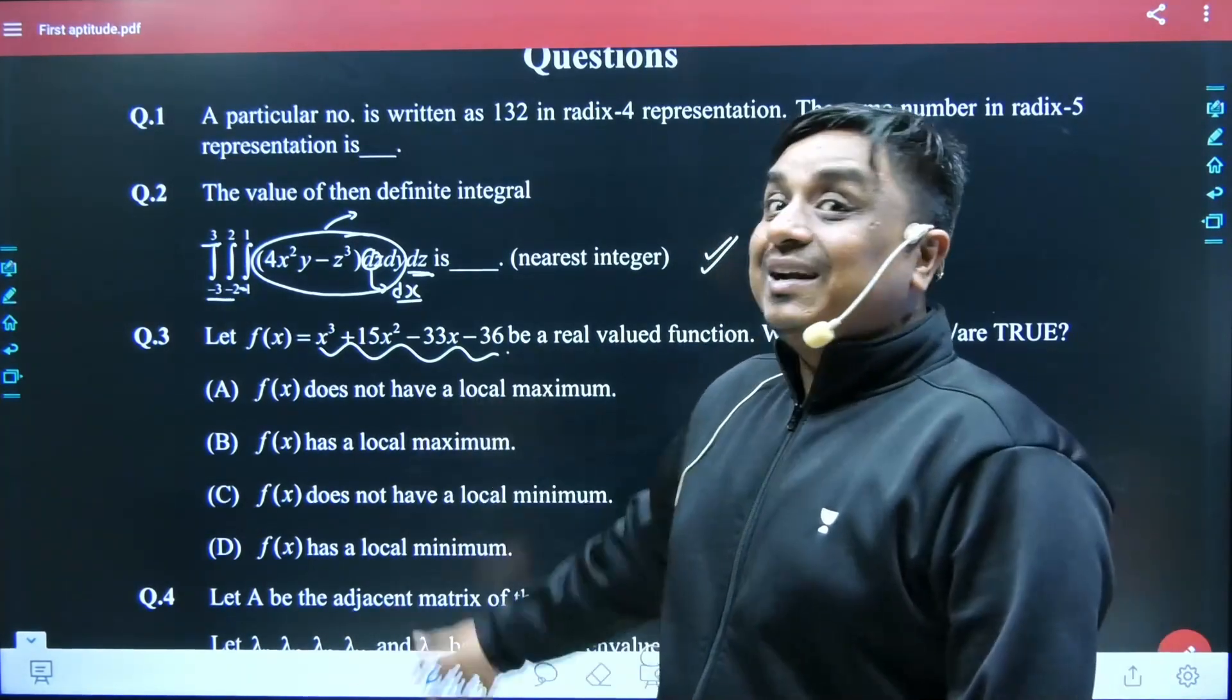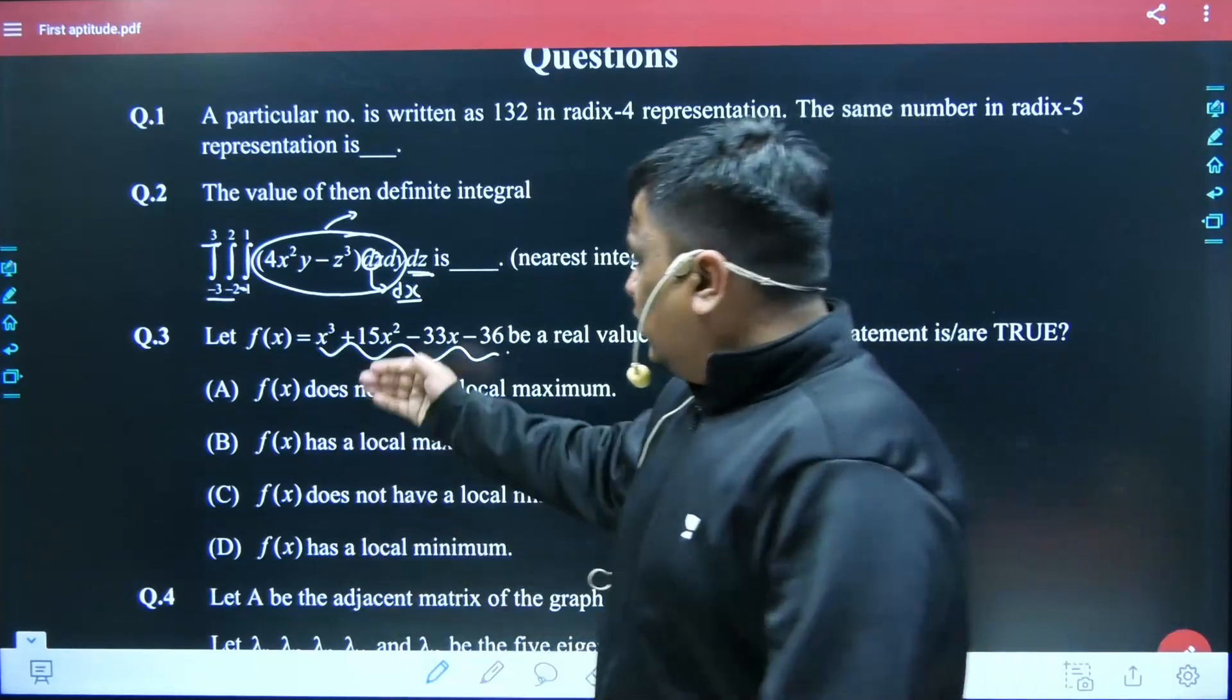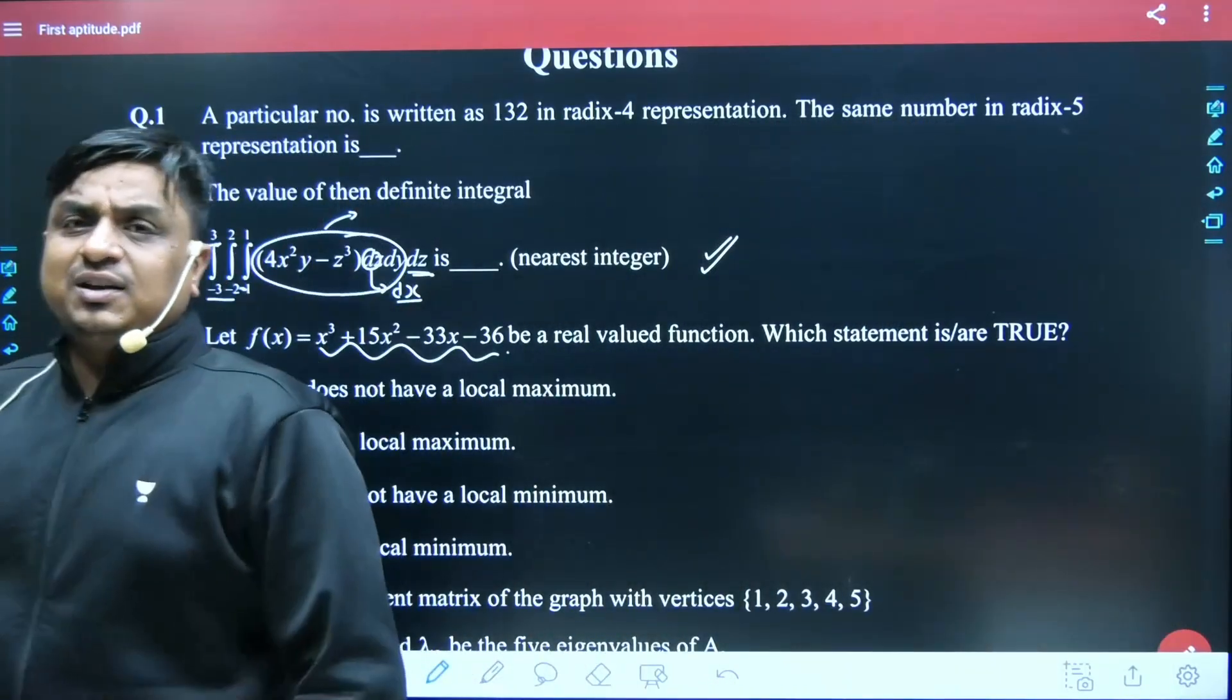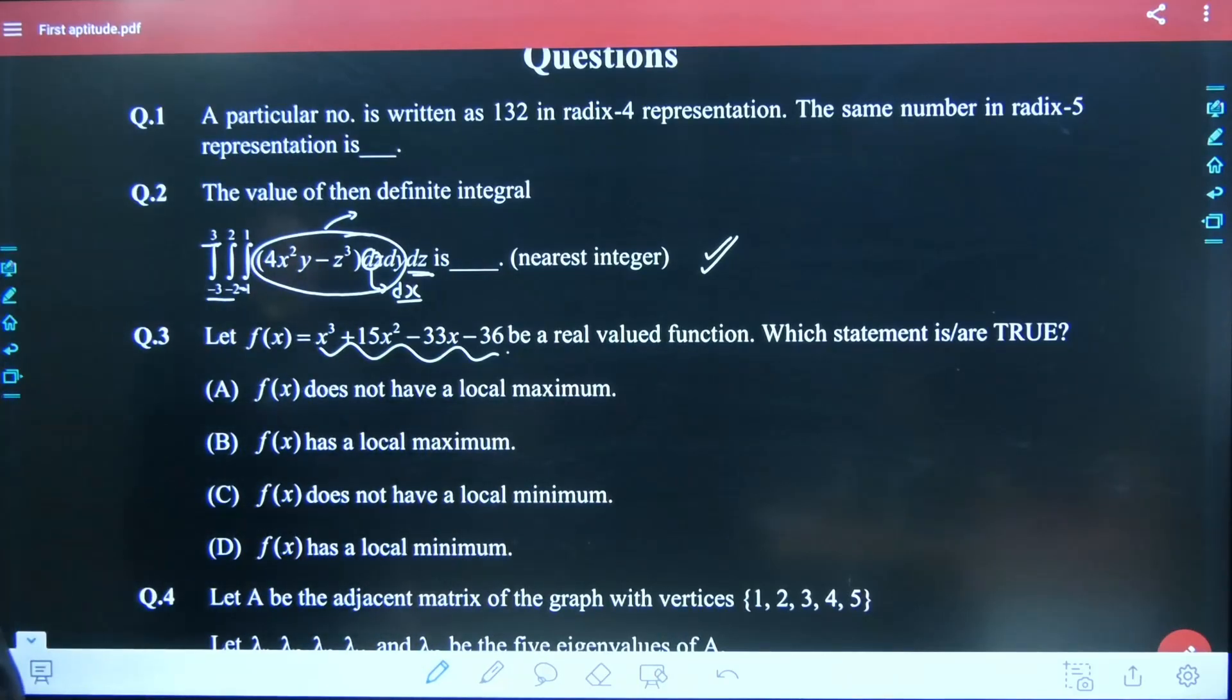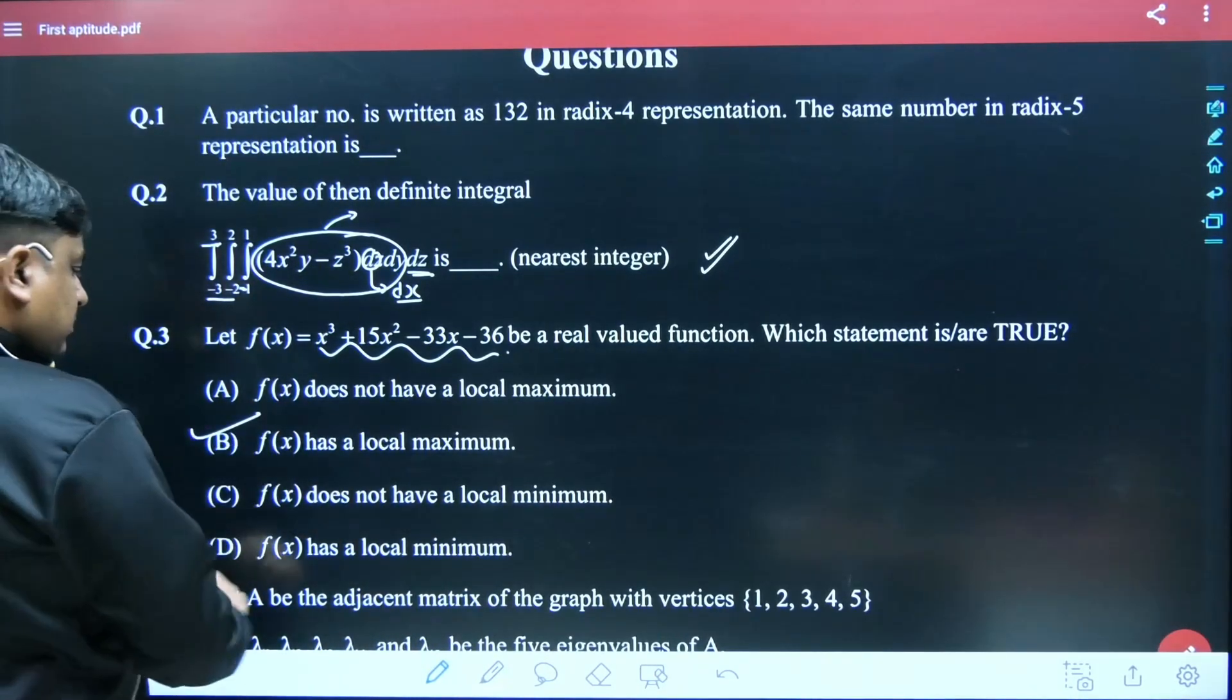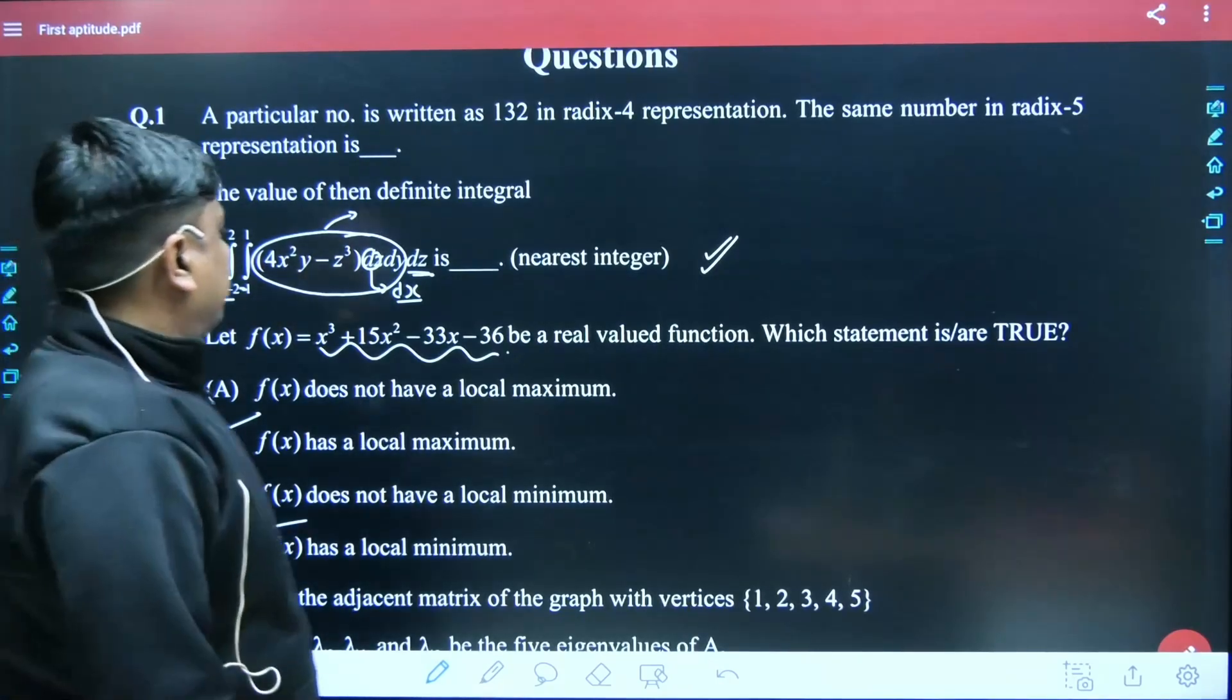This would not be that difficult to handle. You have to take its first derivative and compare. You'll get two stationary points—one is going to be maxima, one is going to be minima. So C and D is supposed to be the best answer.